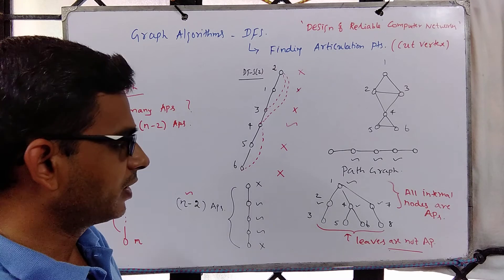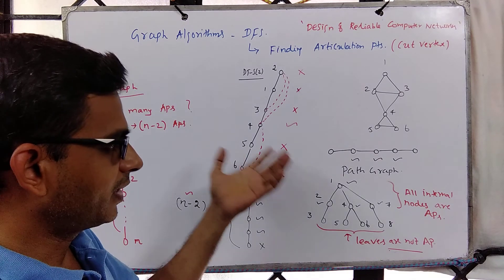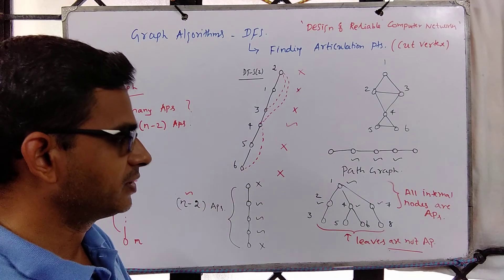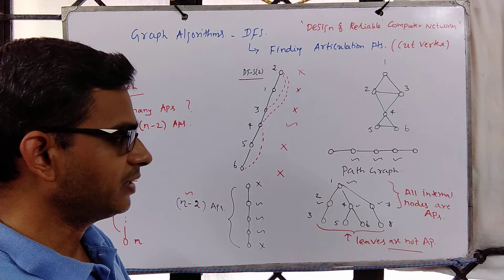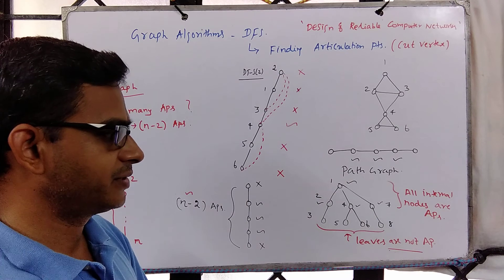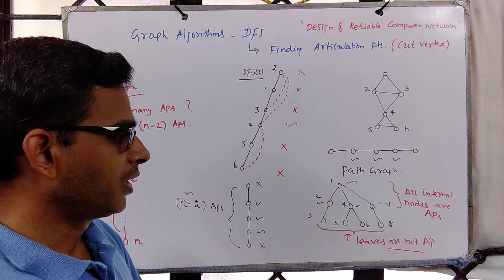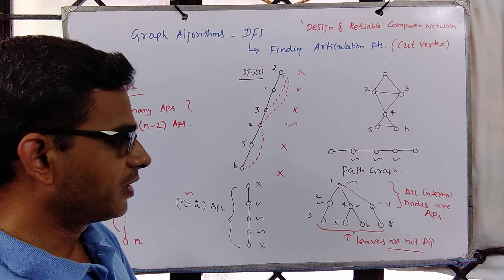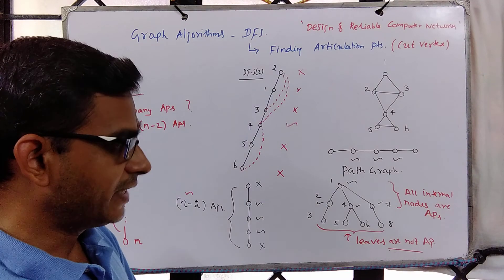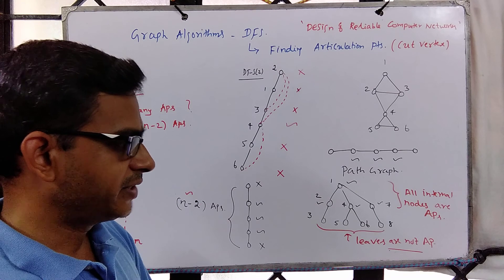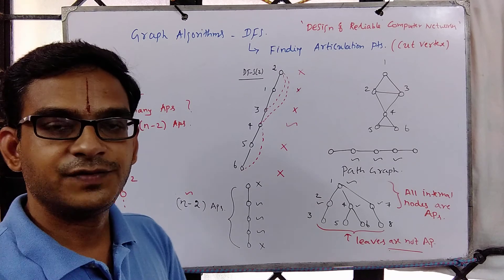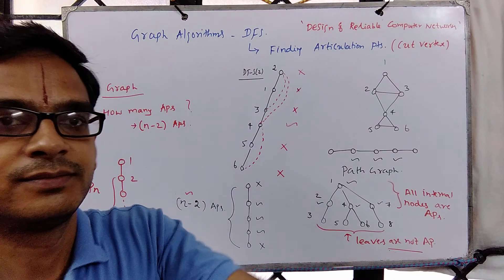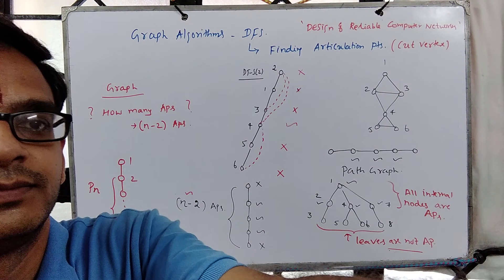The natural algorithm is the one that uses DFS as a black box. On a similar line, we have cut edges or bridges, which we shall see next.